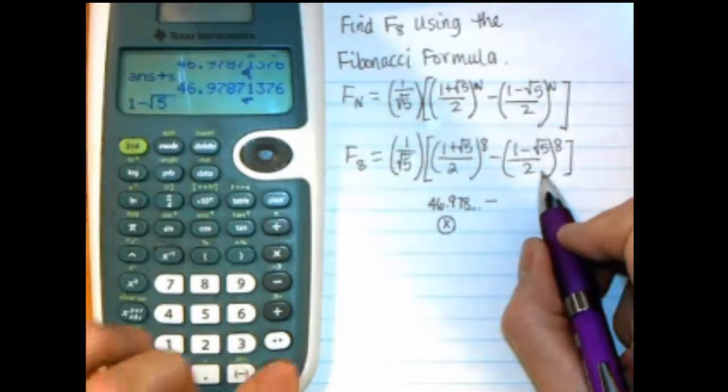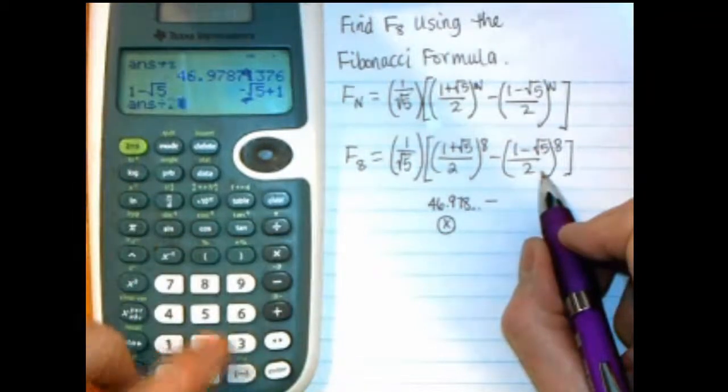And so it'll be 1 minus, and the square root again of 5. And I'll push enter, and take that, divided by 2, enter.